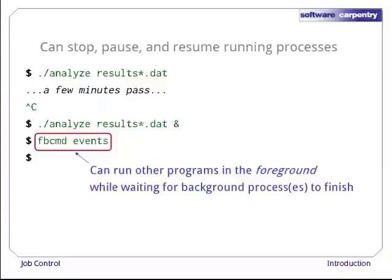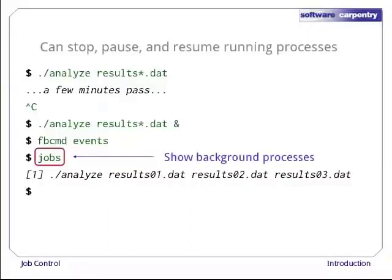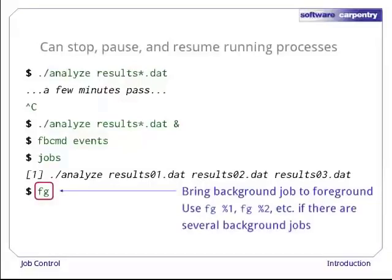Since there's nothing going on, let's run the jobs command. This tells us what processes are currently running in the background. Since we can't think of any other way to procrastinate, we use the foreground command, fg. This brings our background job into the foreground. If we have several jobs running in the background, we can control which one we bring to the foreground using fg %1, fg %2, and so on. The IDs are not the process IDs; instead they are the job IDs displayed by the jobs command.